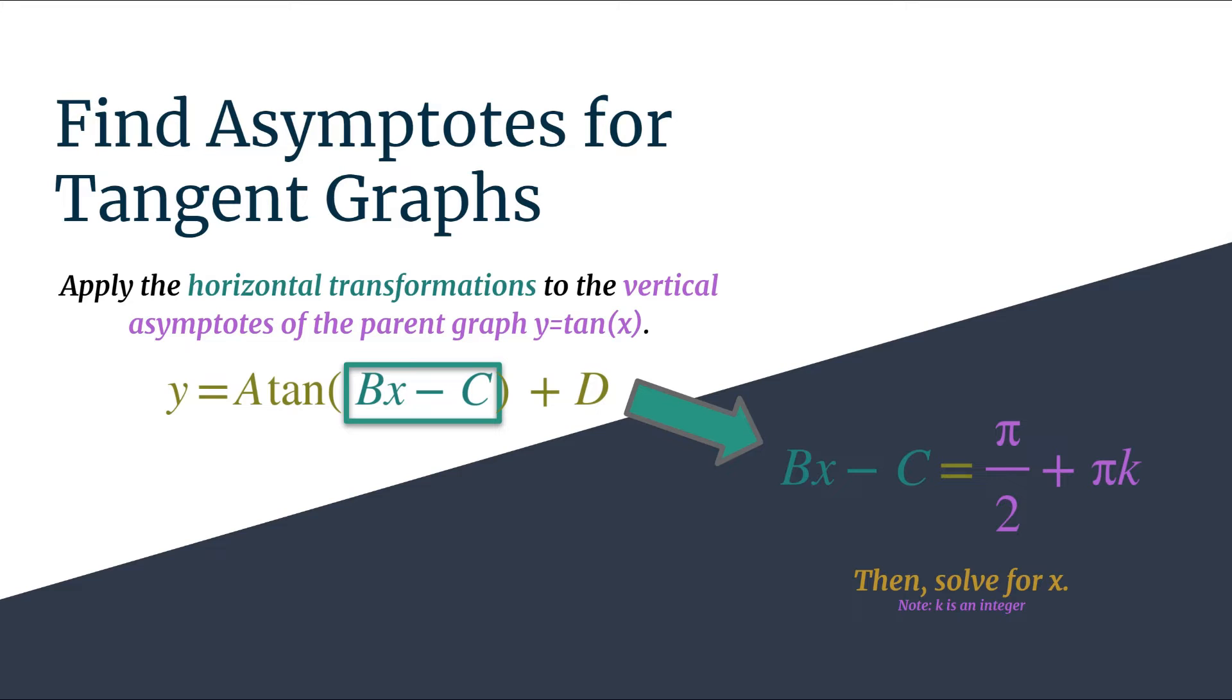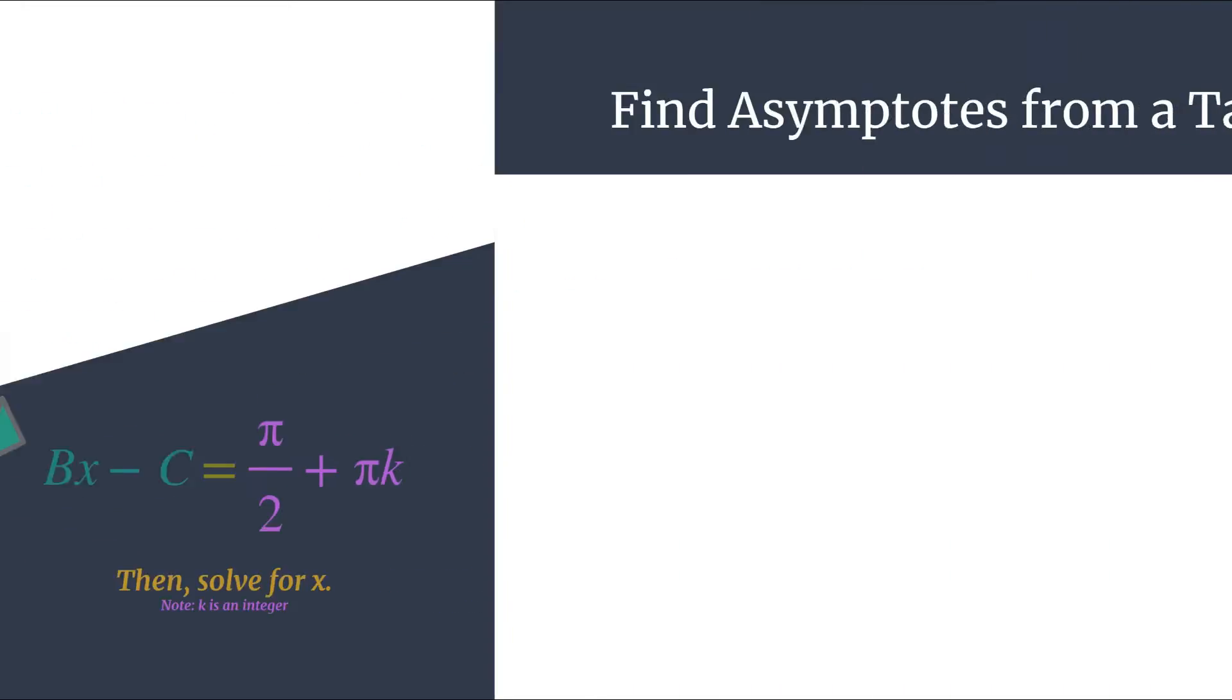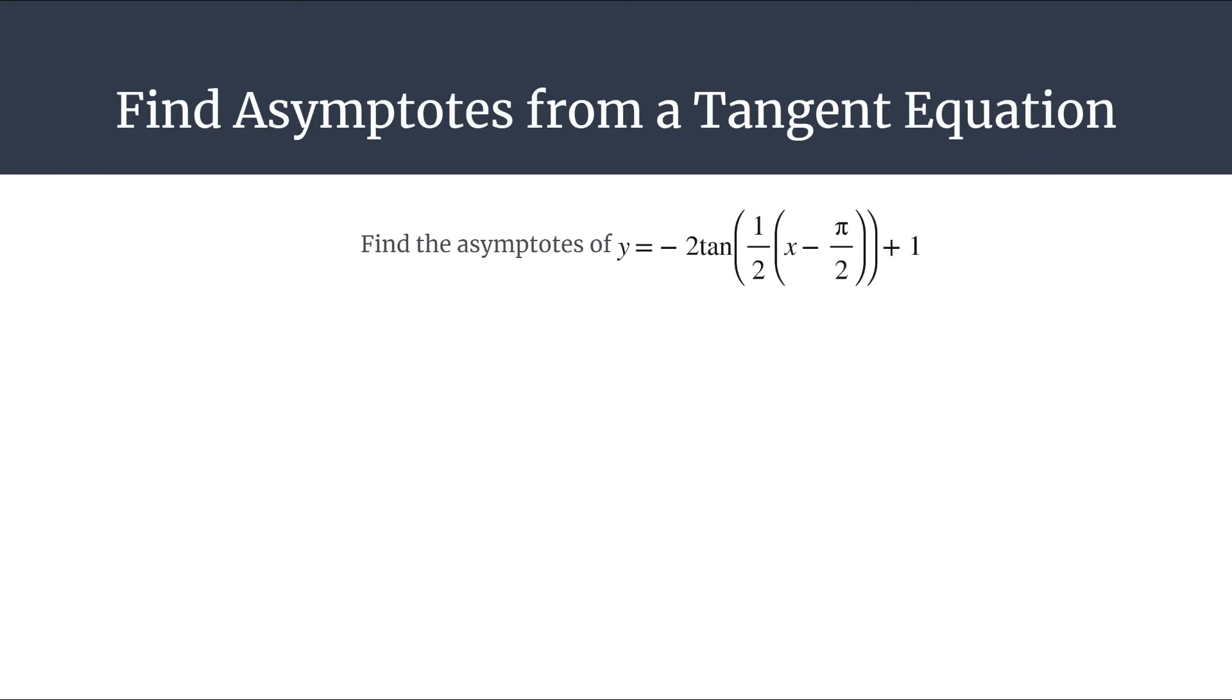So for example, you can let k equal 0 or 1 or 2, and by doing that you'll get different vertical asymptotes in your tangent graph. Alright, so let's look at an example and get more comfortable with how this works. Say we want to find the asymptotes for this equation: y equals negative 2 tan of 1 half x minus pi over 2 plus 1.